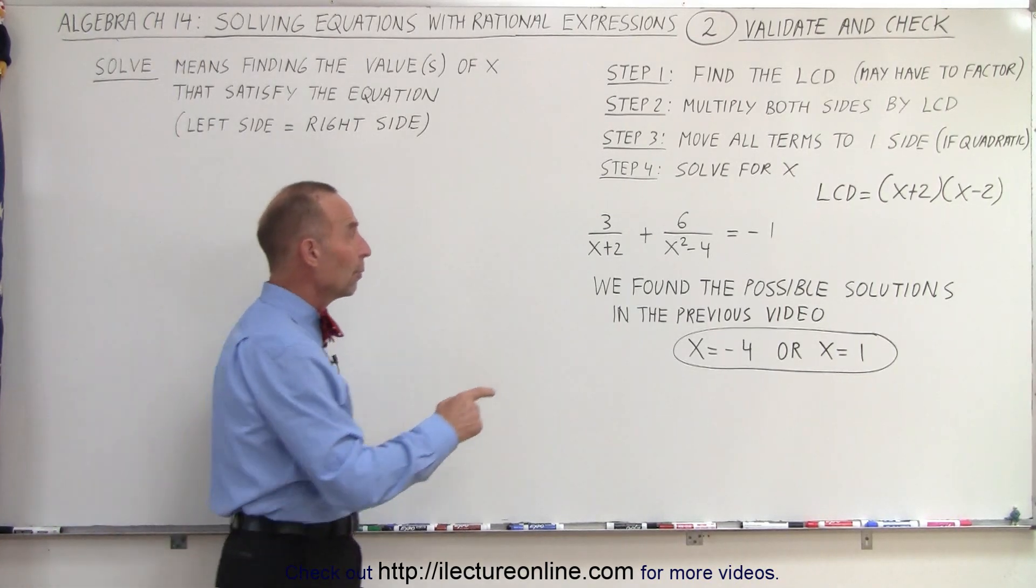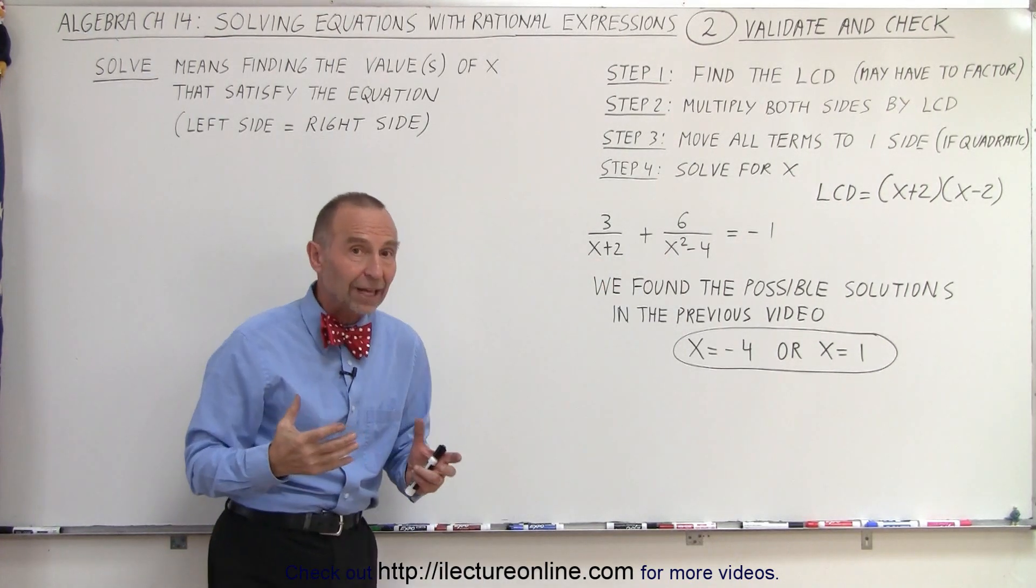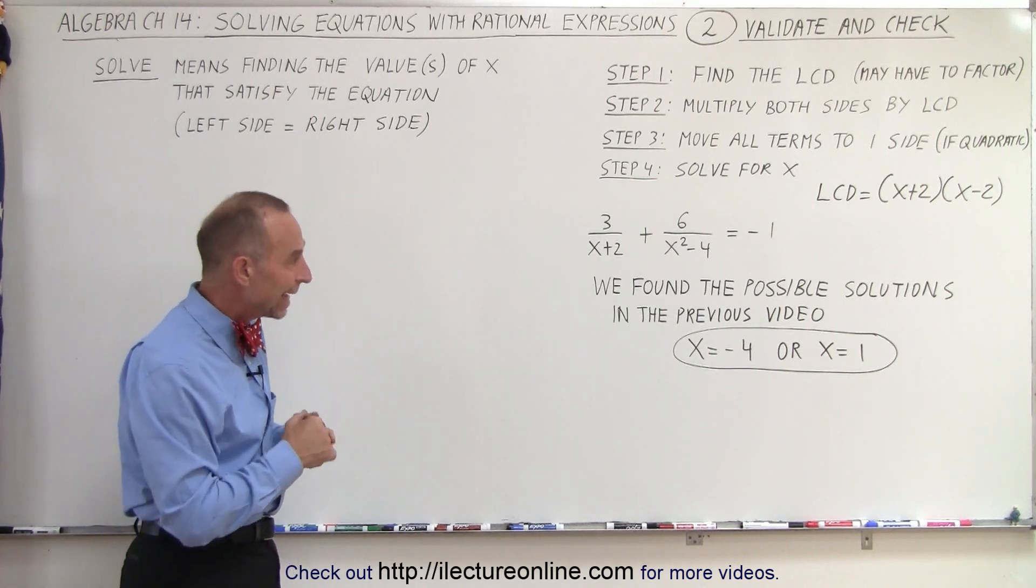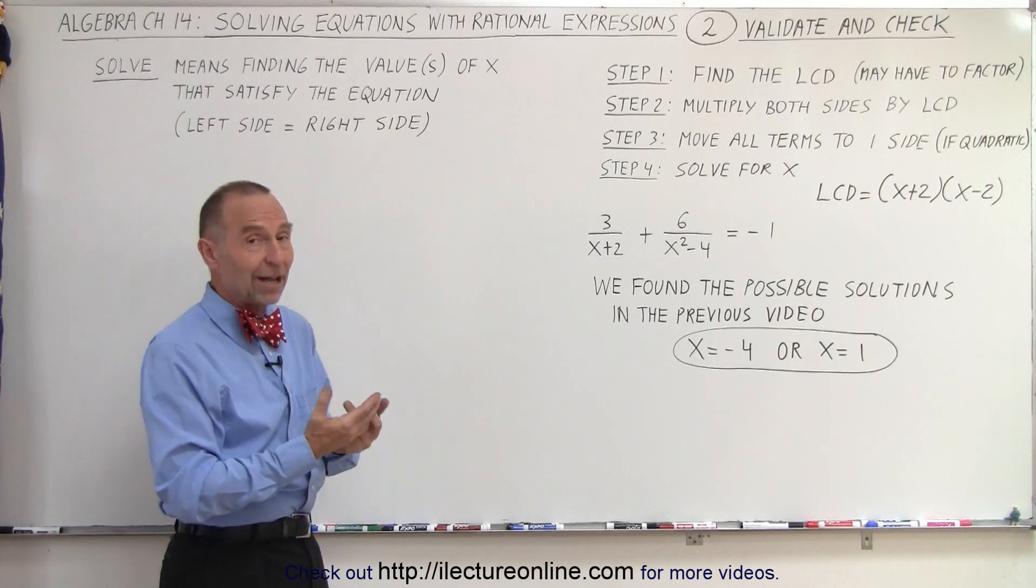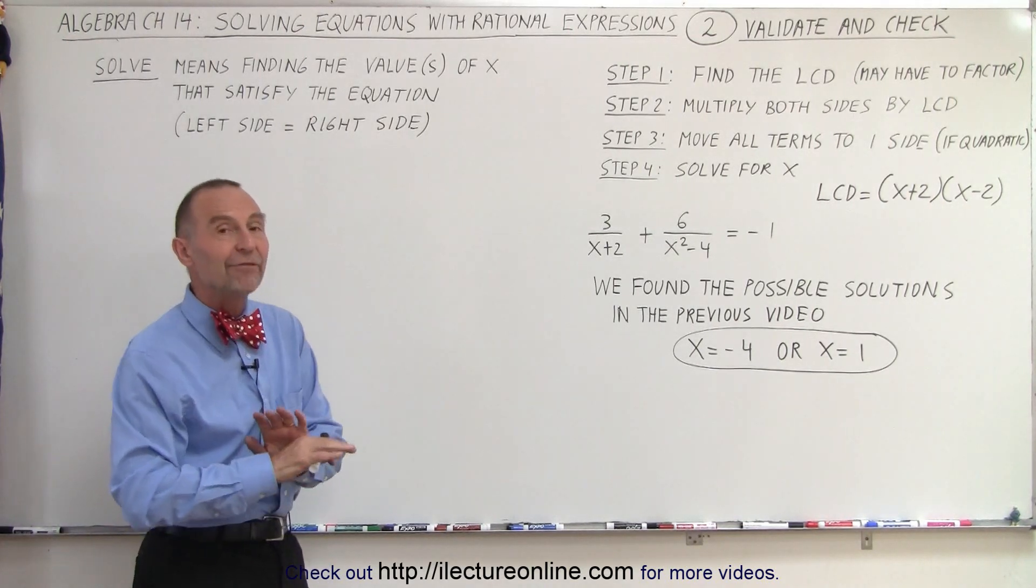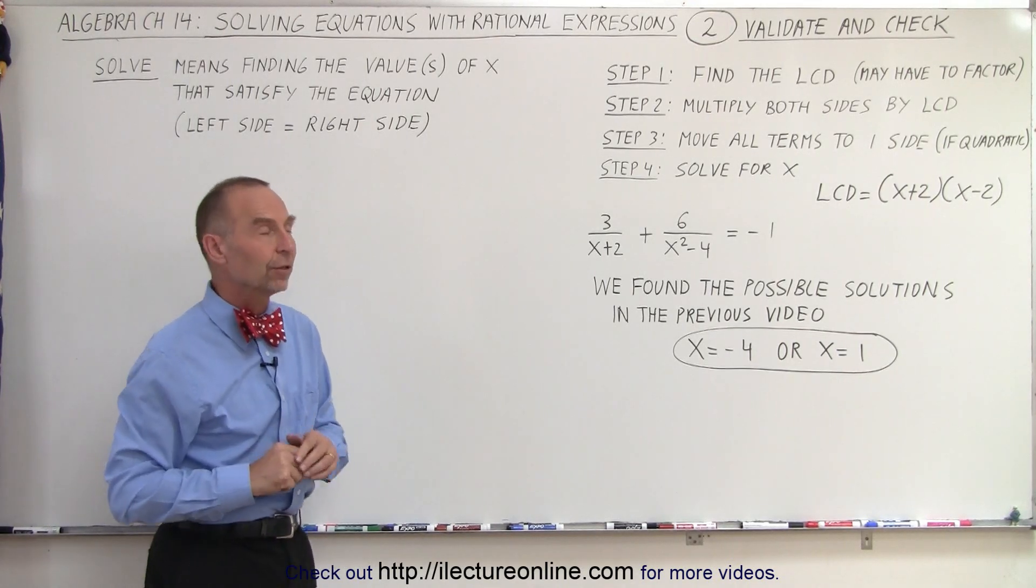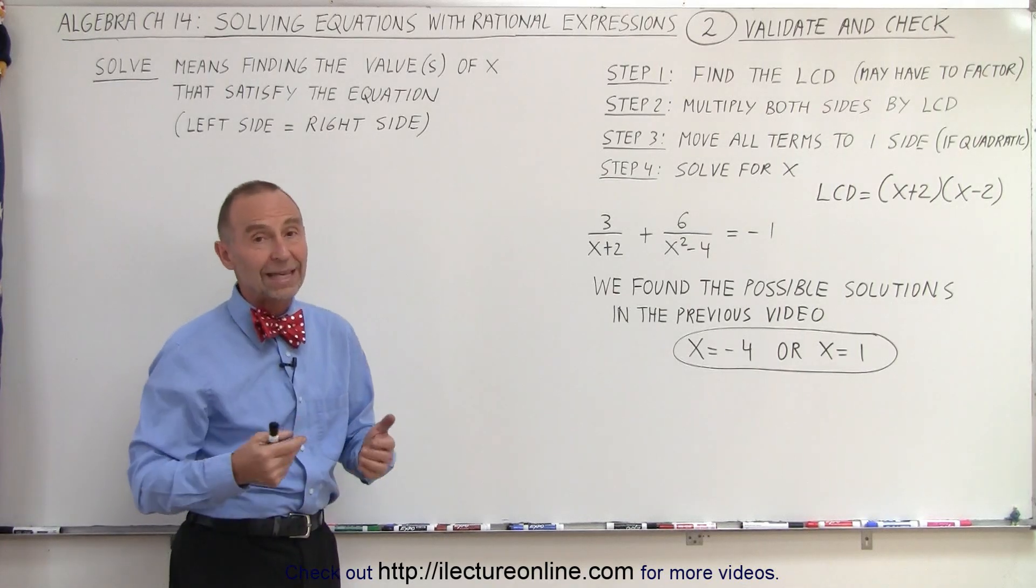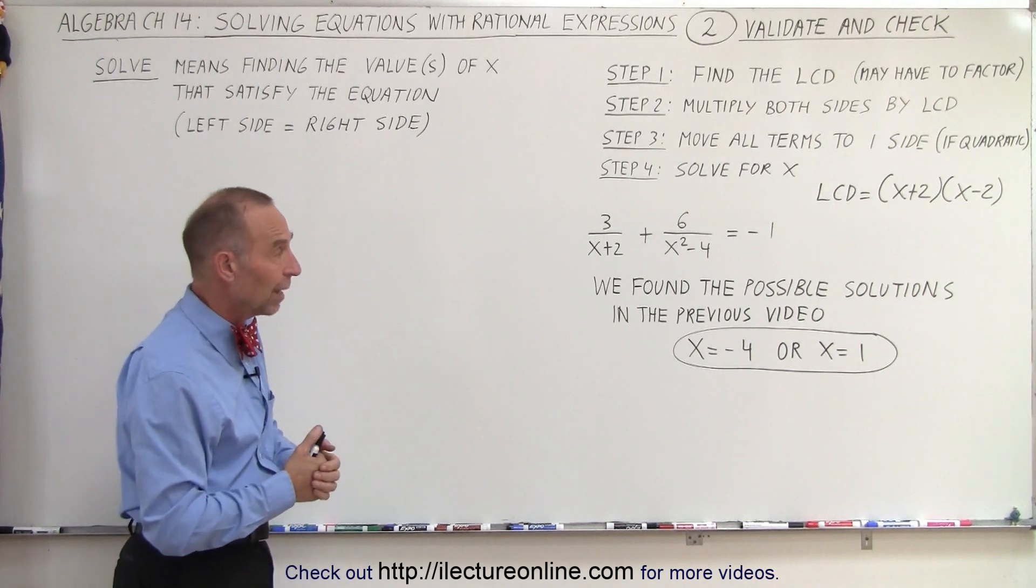First of all, we have denominators that contain the variable, and so there are certain values that x cannot be because that would make the denominator zero. We cannot divide by zero. We cannot have zero in the denominators. That would invalidate the solution if the solution happens to be one of those values. So we first need to validate our solutions to see if they do not violate the rule that we cannot have a zero denominator.